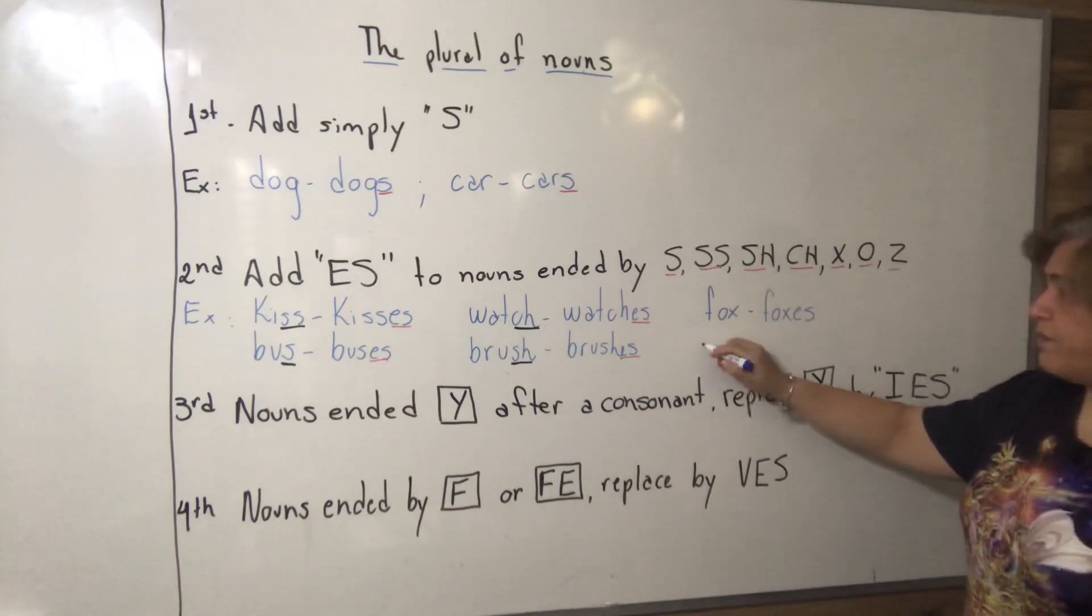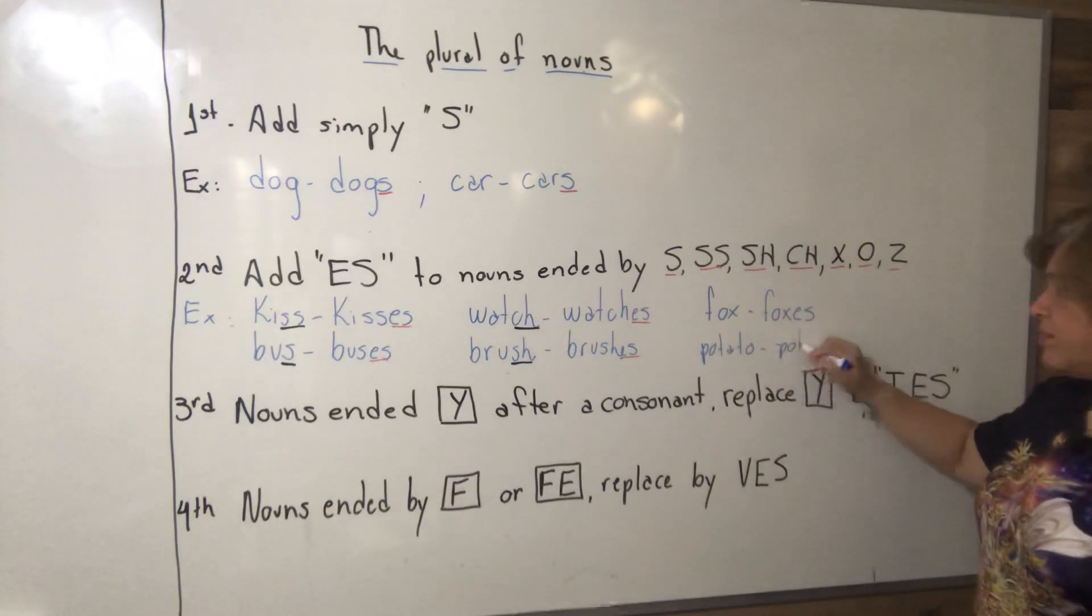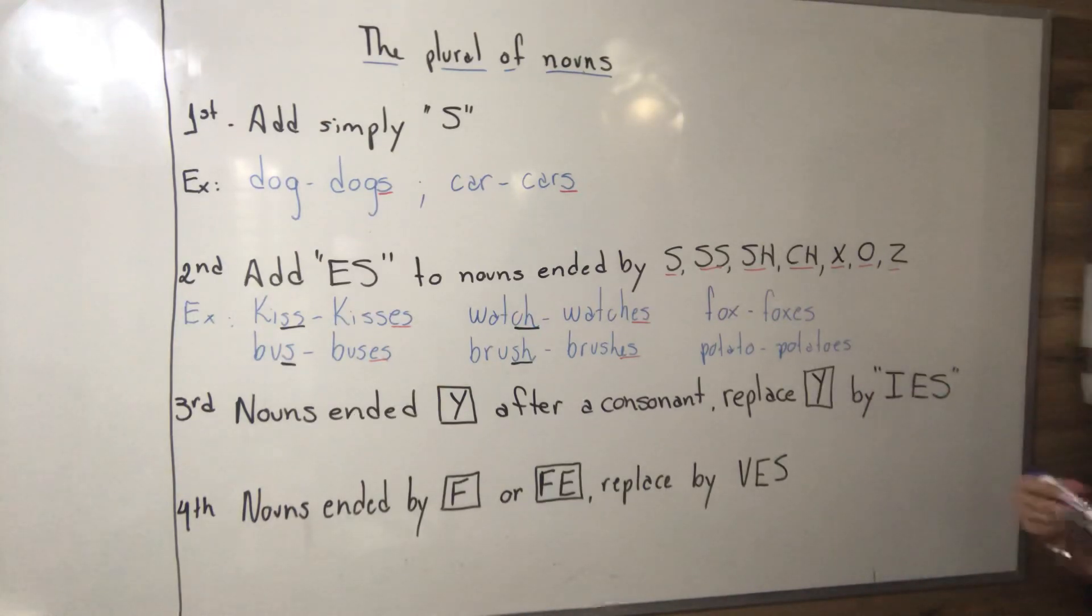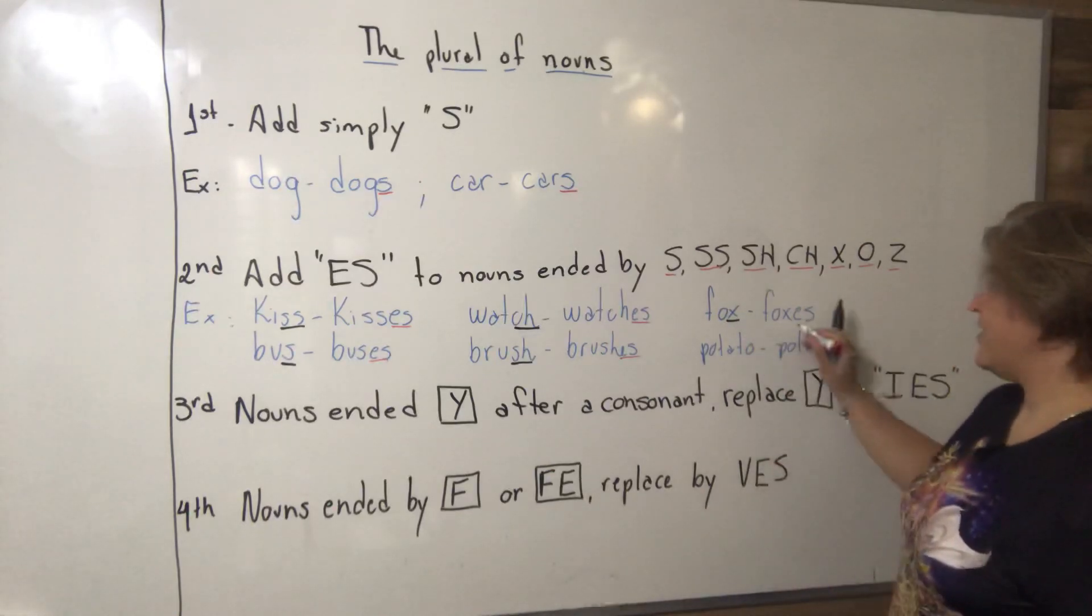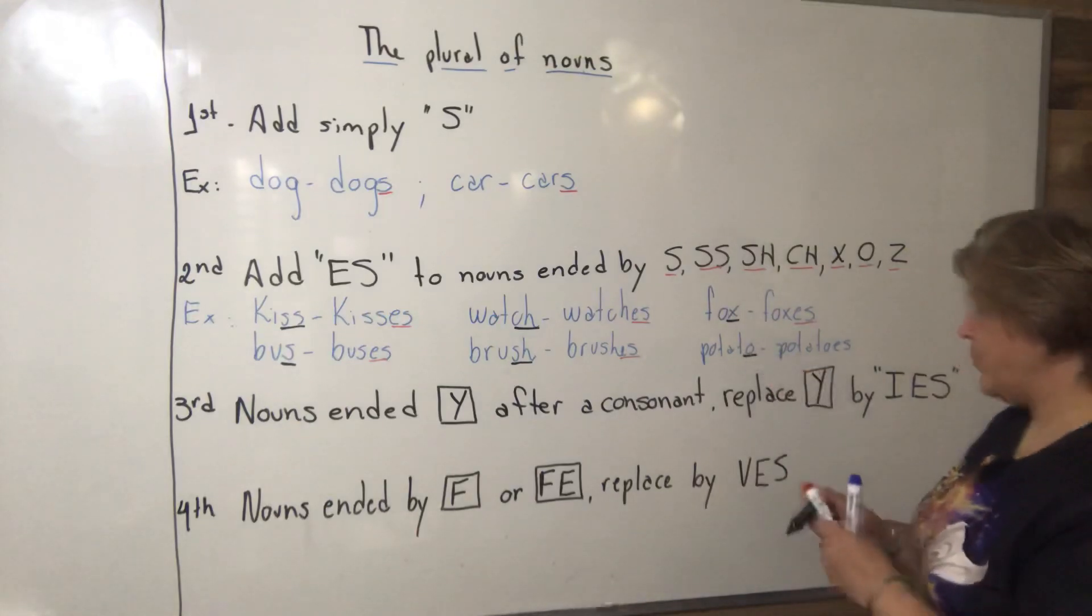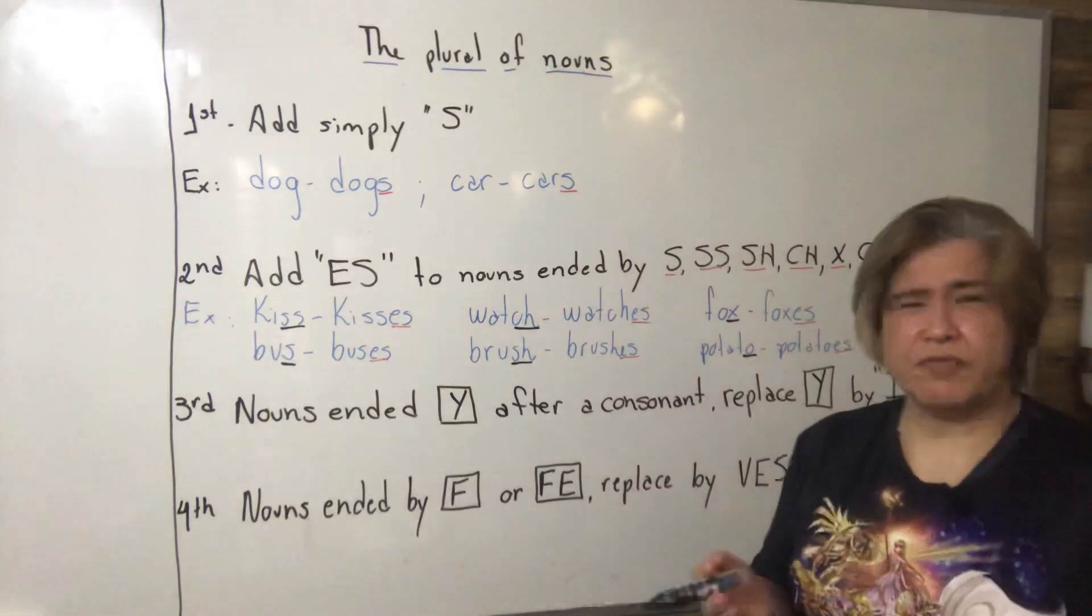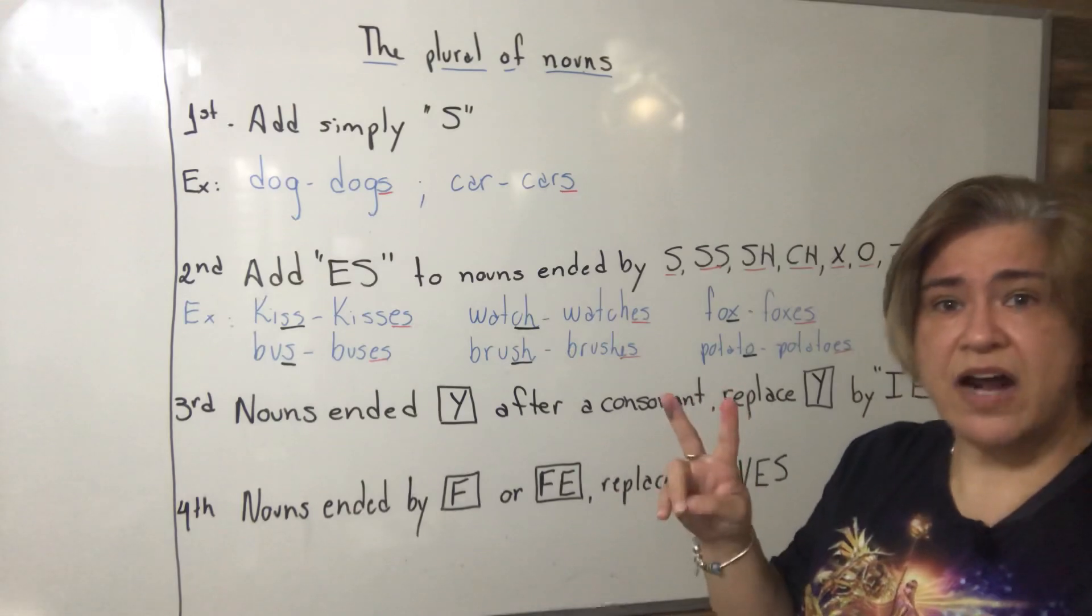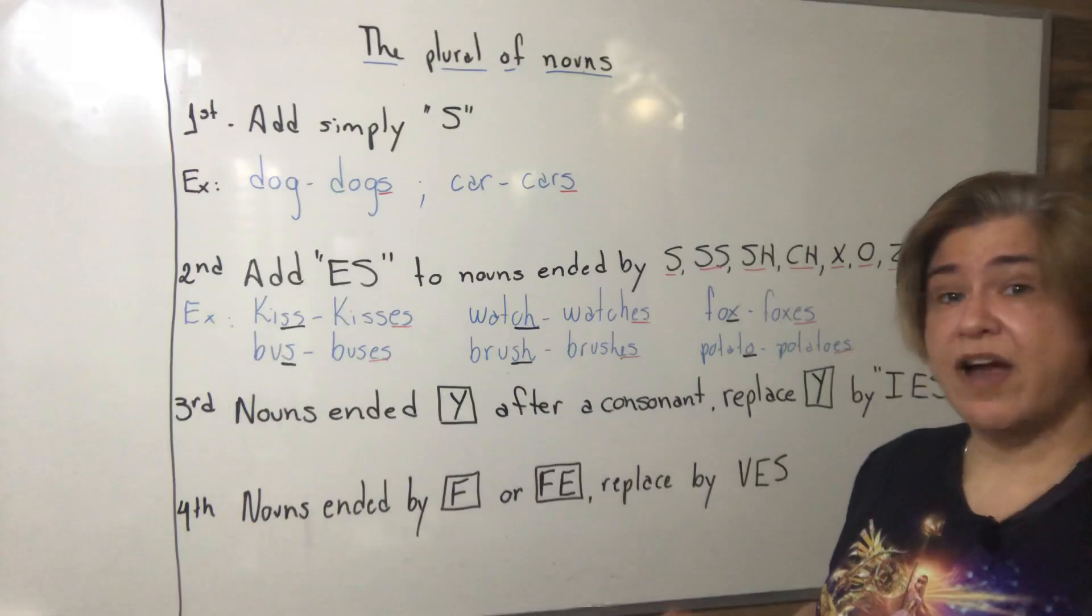The word finishes in X, we add ES. Fox - the word finishing in O, we add ES. Fox, you remember students, is raposa. There are two foxes living in my garden.